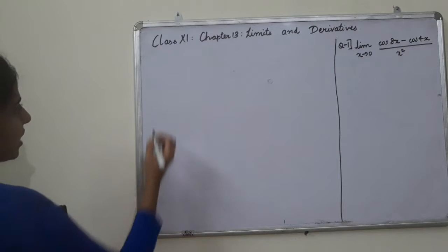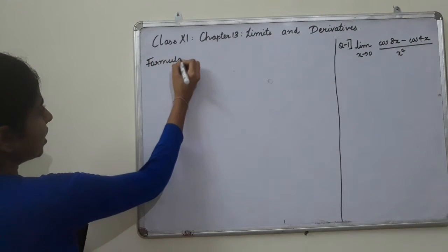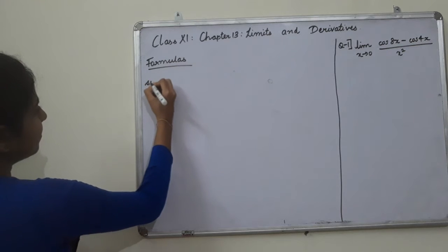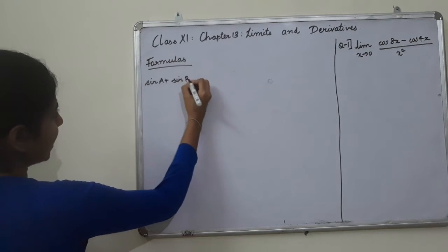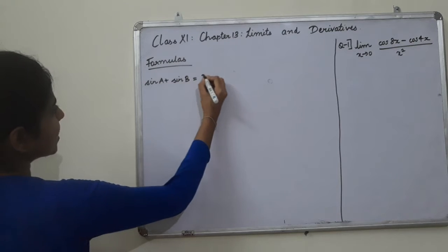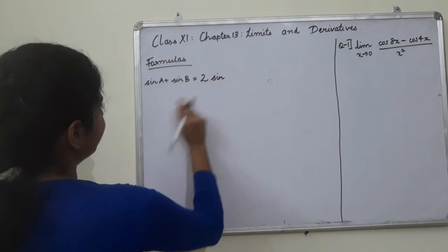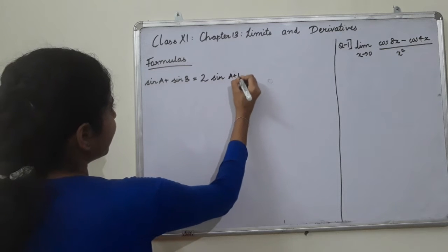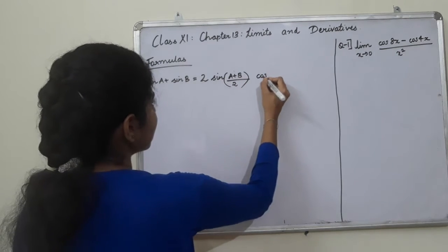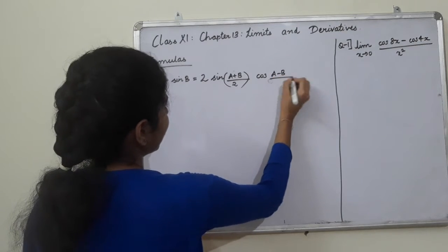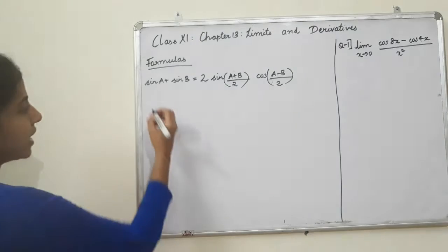So, what are the formulas? The first formula: sin A plus sin B is equal to 2 sin((A plus B)/2) cos((A minus B)/2). This is a key pillar formula.